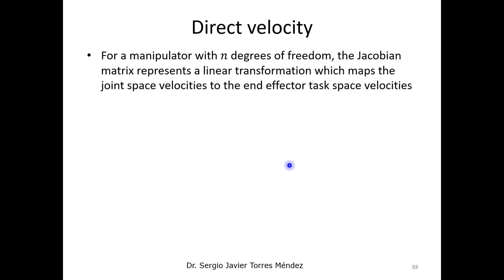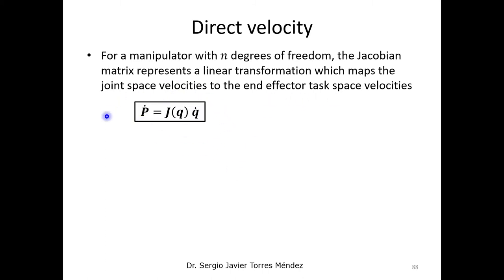For direct velocity, assuming we have an n degree-of-freedom robot, the Jacobian matrix maps the relationship between the joint space velocities and the end-effector velocities. This Jacobian matrix depends on the robot configuration and is multiplied by the joint velocities to obtain the end-effector velocities.